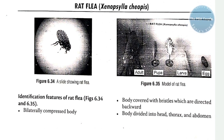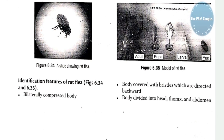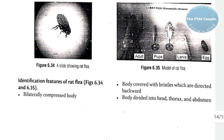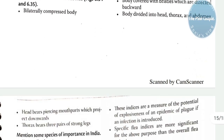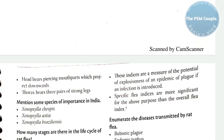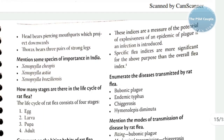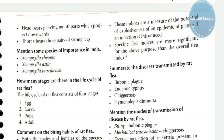The next spot is the rat flea, Xenopsylla cheopis. Identification features: bilaterally compressed body, body covered with bristles directed backwards, body divided into head, thorax, and abdomen. In the picture, the model shows stages: egg, larva, pupa, and adult. The head bears piercing mouthparts which project downwards; the thorax bears three pairs of strong legs.